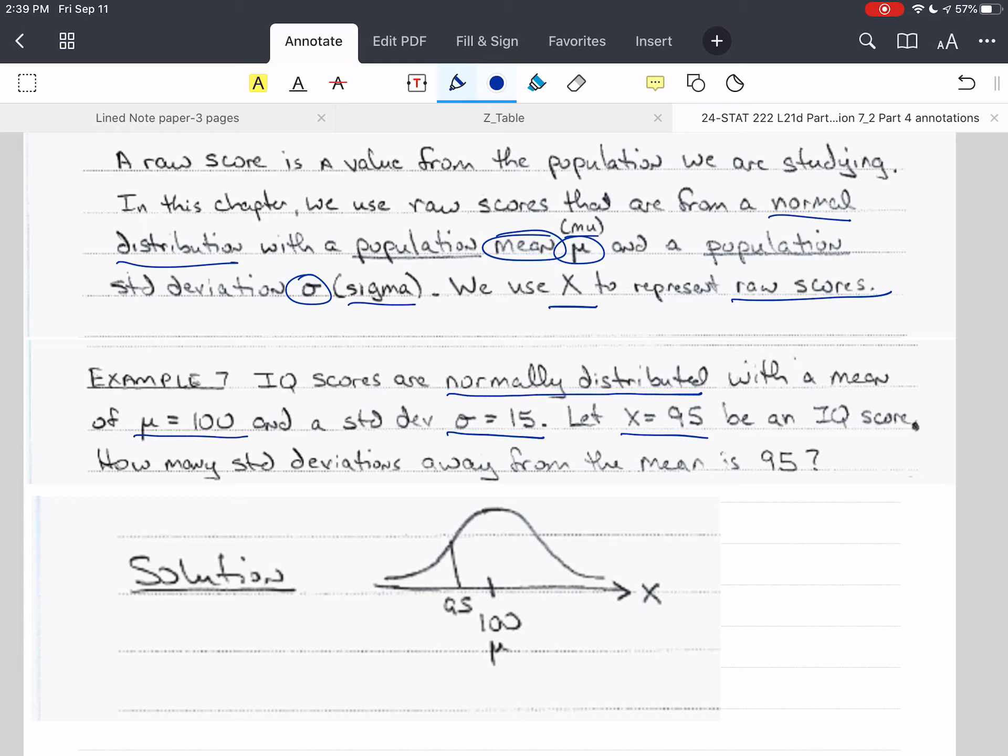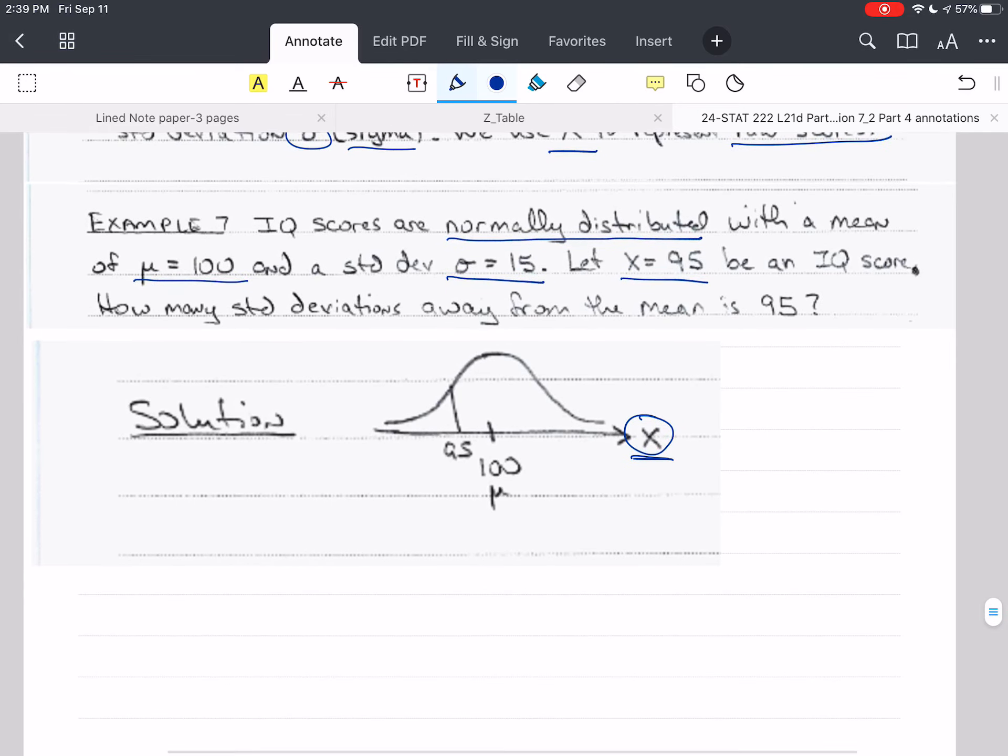So if we have somebody's raw score, their IQ is 95. How many standard deviations away from the mean is 95? We will give direction with this as well. It's going to be below the mean, because the mean is 100 and 95 is less than that. And so we want to notice that instead of Z, I've now labeled this with X.